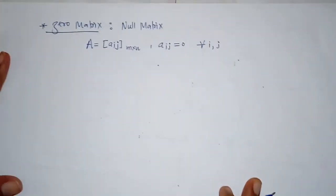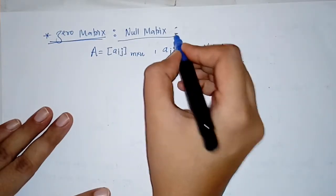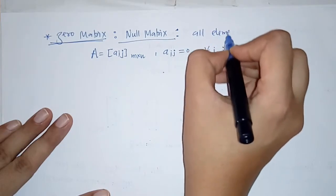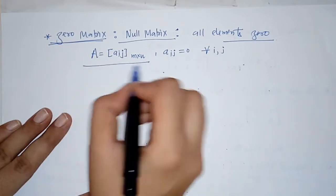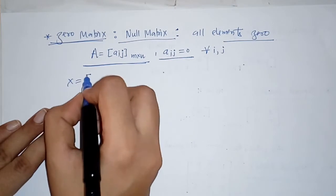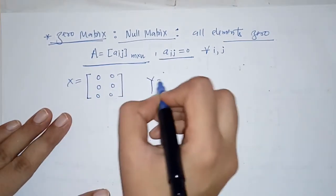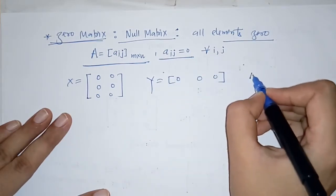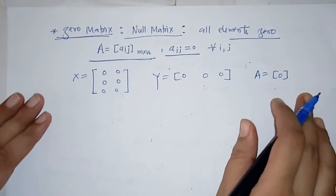Next type is the zero matrix, also called the null matrix. In a null matrix, all elements are zero. In general, we represent this matrix with all elements being zero. All these are examples of the zero matrix.